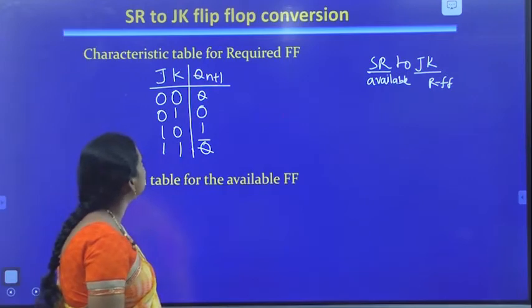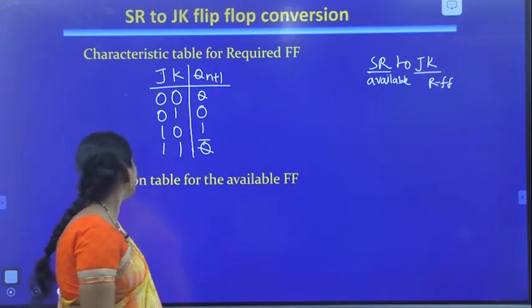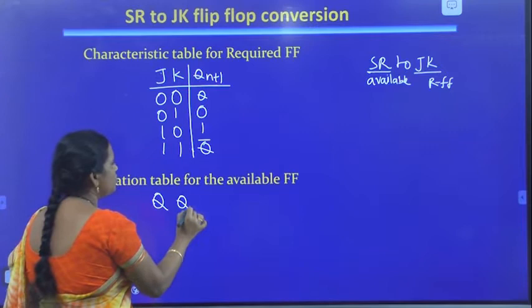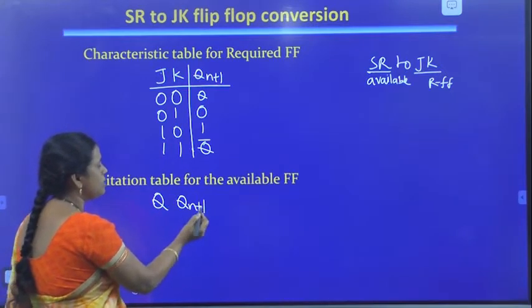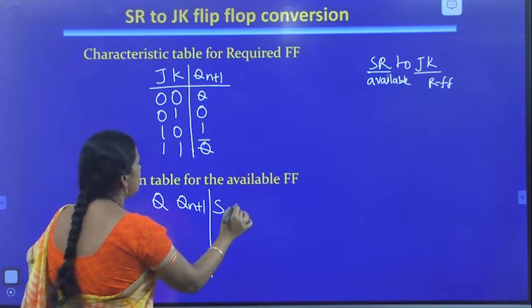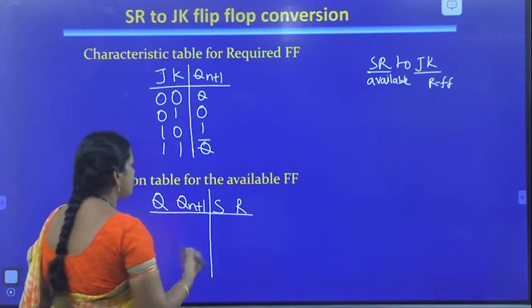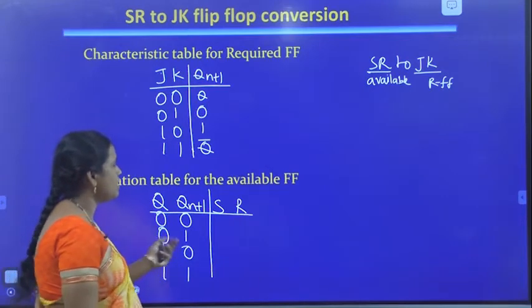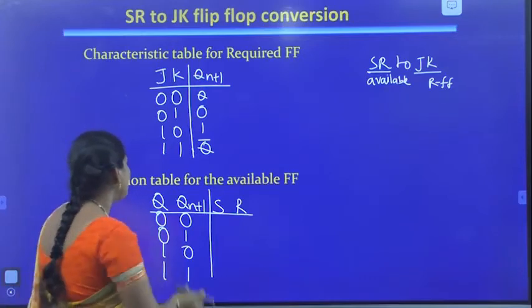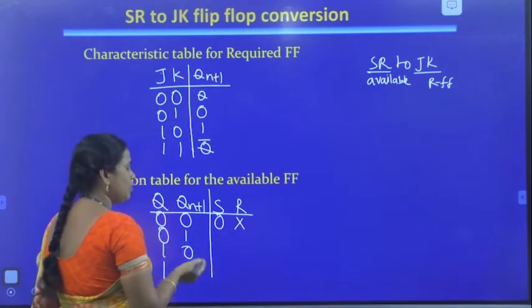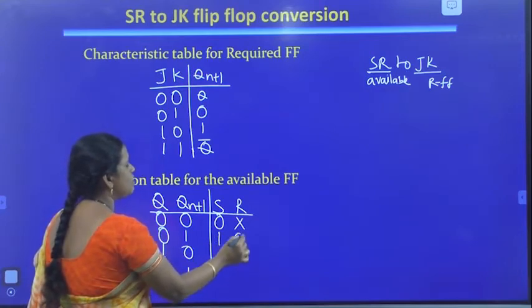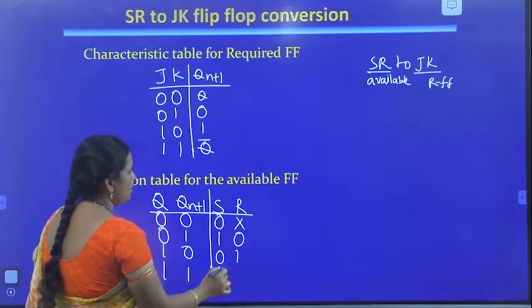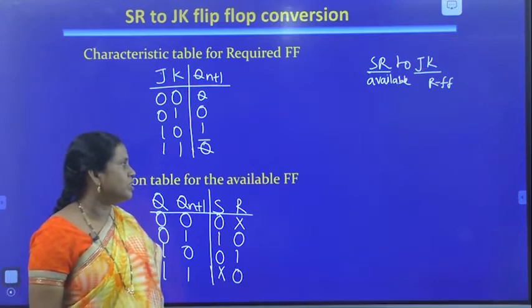Next, let us write the excitation table for the available flip-flop, which is SR. The excitation table has present state Q, next state Q(N+1), and flip-flop inputs S and R. For Q=0 to Q(N+1)=0: S=0, R=don't care. For Q=0 to Q(N+1)=1: S=1, R=0. For Q=1 to Q(N+1)=0: S=0, R=1. For Q=1 to Q(N+1)=1: S=don't care, R=0.